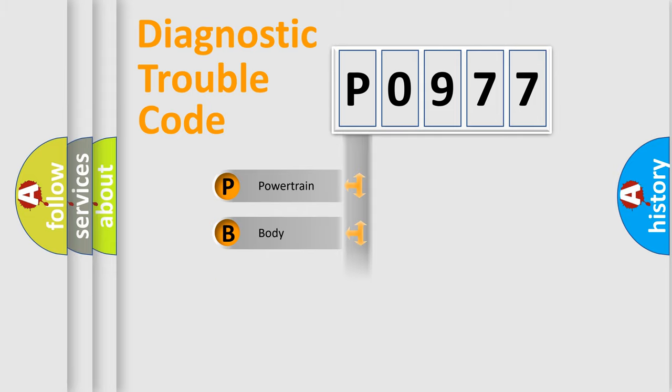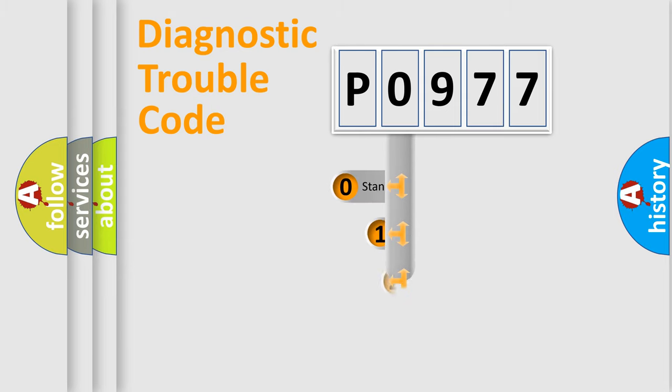Powertrain, Body, Chassis, Network. This distribution is defined in the first character code.